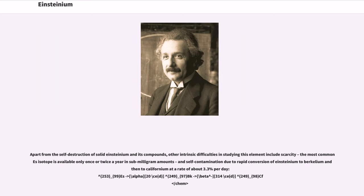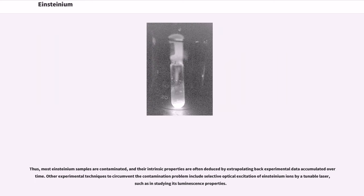Apart from the self-destruction of solid Einsteinium and its compounds, other intrinsic difficulties in studying this element include scarcity, the most common Es isotope is available only once or twice a year in sub-milligram amounts, and self-contamination due to rapid conversion of Einsteinium to berkelium and then to californium at a rate of about 3.3% per day: 253-99 Es alpha decays with 20 day half-life to 249-97 Bk, which beta decays with 314 day half-life to 249-98 Cf. Thus, most Einsteinium samples are contaminated, and their intrinsic properties are often deduced by extrapolating back experimental data accumulated over time. Other experimental techniques to circumvent the contamination problem include selective optical excitation of Einsteinium ions by a tunable laser, such as in studying its luminescence properties.